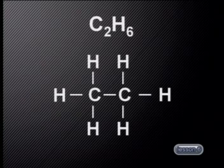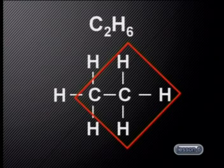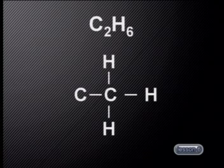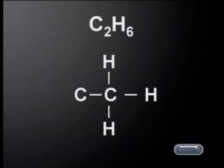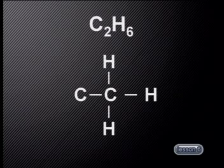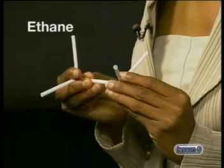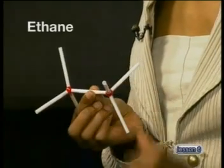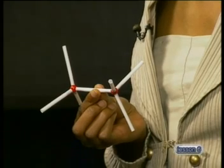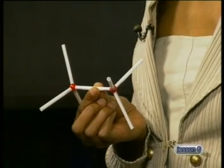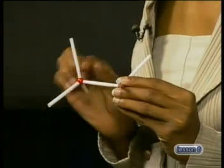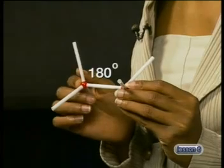In ethane, there are two carbon atoms and six hydrogen atoms. Looking at one carbon atom, it forms three single bonds with three hydrogen atoms and a single bond with the other carbon atom. So there are four bond pairs that need to be arranged as far away from each other as possible. The shape that makes this possible is the tetrahedral shape. The same arrangement takes place around the second carbon atom, giving us two tetrahedral shapes joined together.